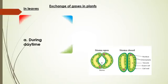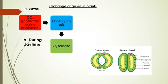During the daytime, there is a process called photosynthesis. In photosynthesis, plants take carbon dioxide from the environment and use it to make their food. The carbon dioxide that the plant itself generates during respiration is also consumed during photosynthesis, and oxygen is released.